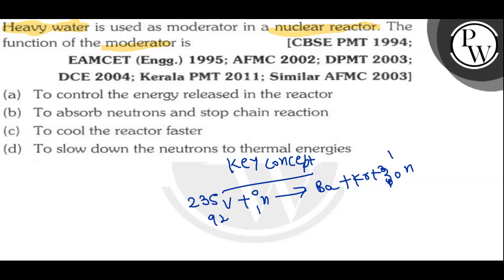The function of the moderator is to absorb these fast-moving neutrons and slow them down. So the function of the moderator is to slow down the neutrons to thermal energies. Therefore, option D is the correct answer. I hope you understand the question — all the best.